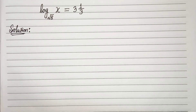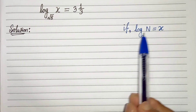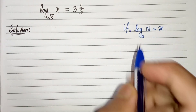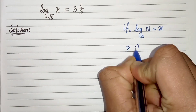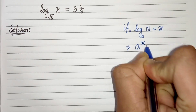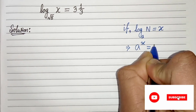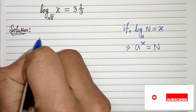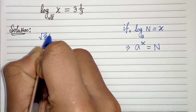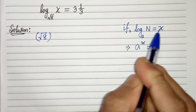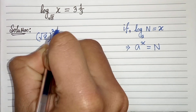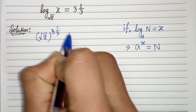First of all, we know from the definition of log that if log of n with the base a is equals to x, then we can write a to the power x is equals to n. So from this we can write root 8 whole to the power 3 and one third is equals to x.